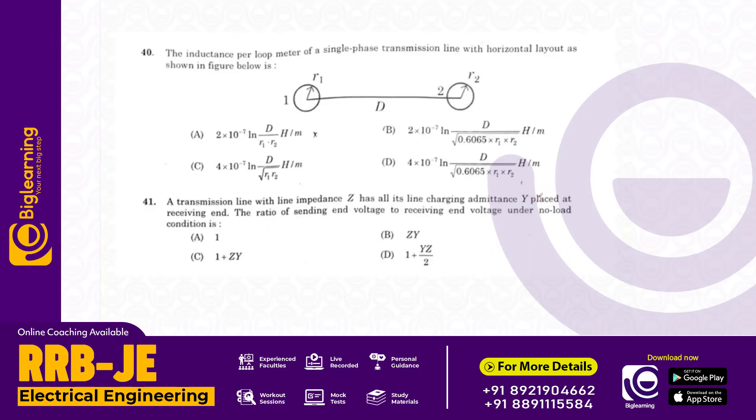The inductance per meter of a single phase transmission line with horizontal layout as shown in the figure is 4 times 10 to the minus 7 logarithm of D by root of 0.6065 R1 R2 henry per meter. Answer D.